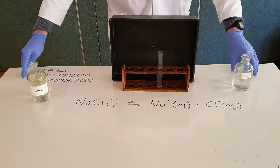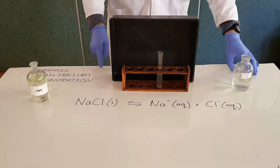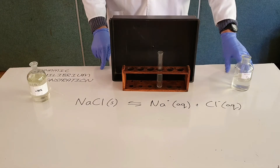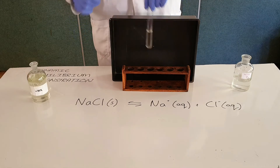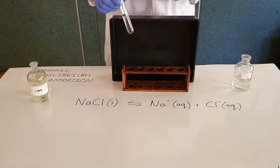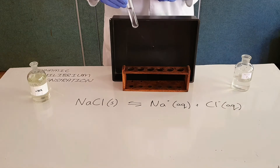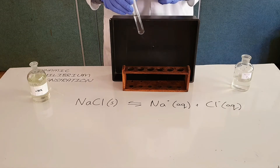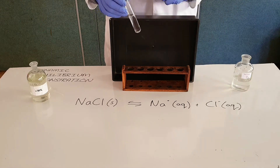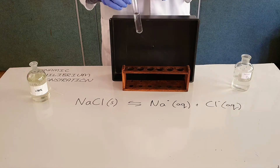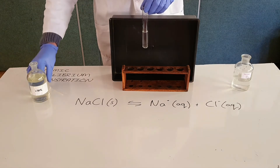A dynamic equilibrium is one in which the forward process is equal to the rate of the reverse process. As an example, we have created a saturated salt solution, meaning that we have added sodium chloride to water until it is saturated — no more sodium chloride can be added to form an aqueous solution anymore.